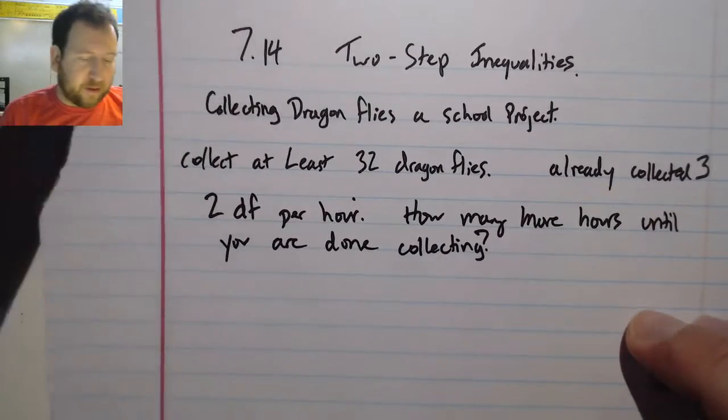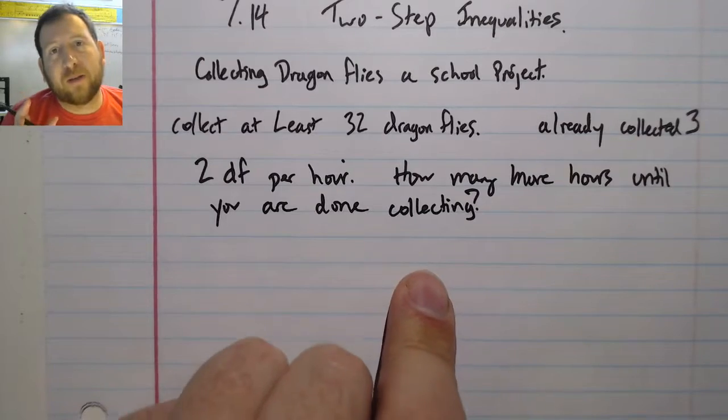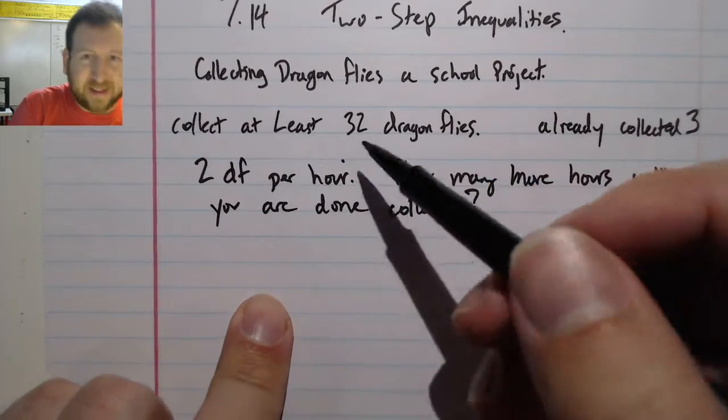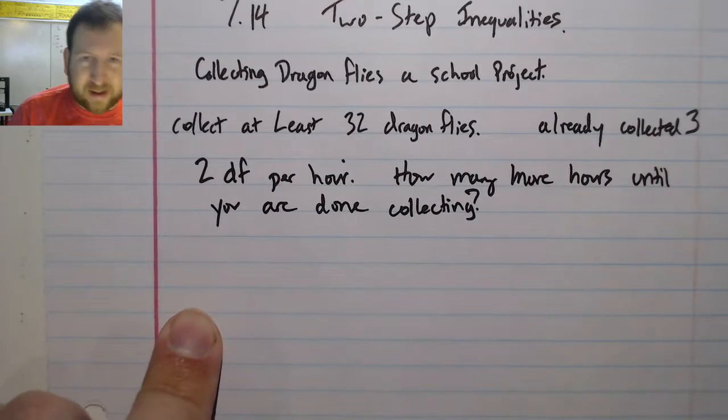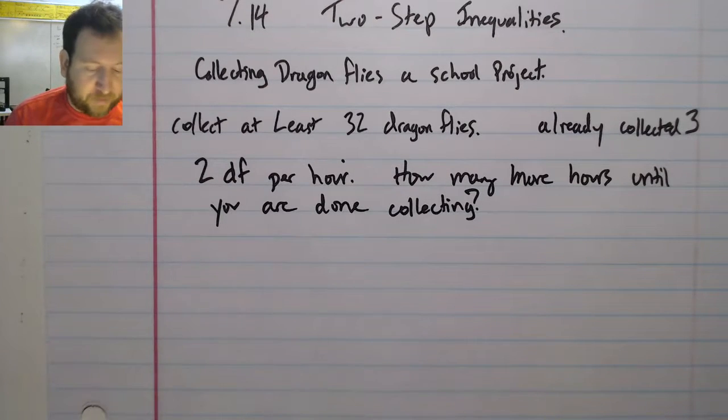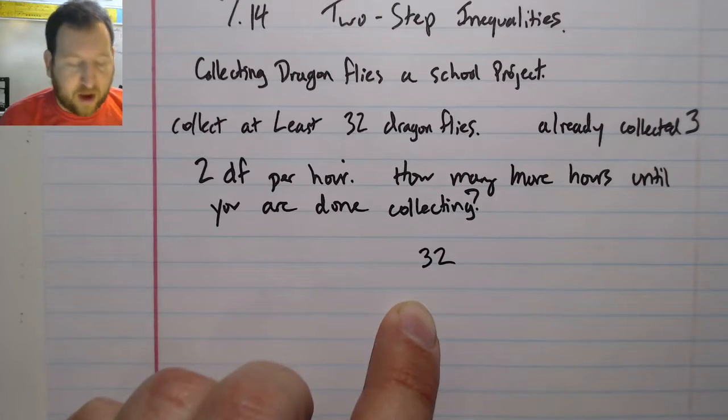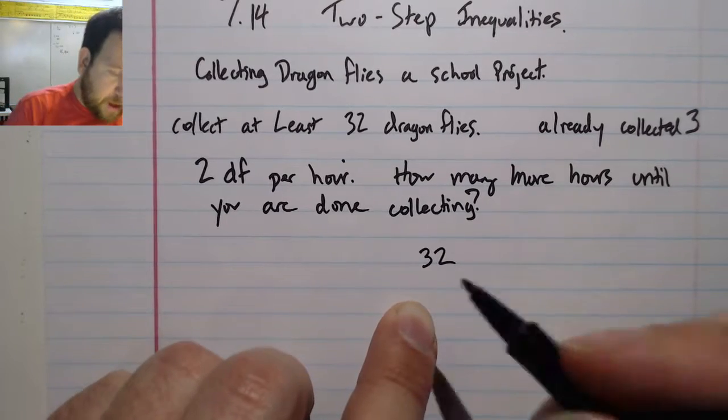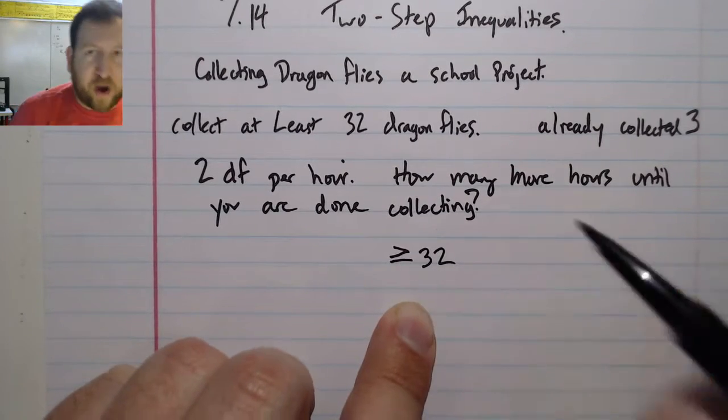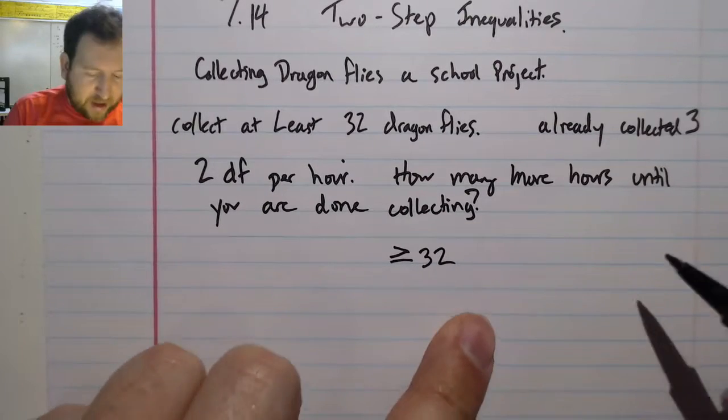All right, well in this case it's similar to what we've been talking about with inequalities and taking verbal models and turning them into equations. It's just that we're going to be using that inequality instead because this time we need at least 32 dragonflies. Maybe if we catch more we can get some extra credit. So I'm gonna write two things that I know a relationship between, and I'm gonna say I know the dragonflies are related to the dragonflies total. So I can say that I know I need at least 32 dragonflies, and let me make sure that I write this correctly. And the number on the other side needs to be greater than or equal to 32.